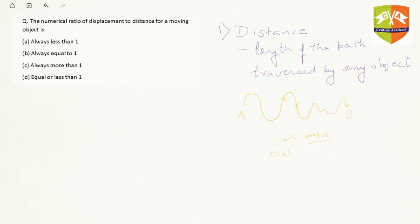While displacement would be the shortest distance between A and B, which happens to be the straight line. This is a straight line joining A and B. Let's say this length of the shortest distance is y meters. So this becomes my displacement.